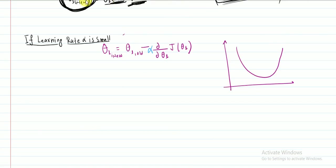Let's look at the learning rate. If the learning rate alpha is small, gradient descent will be slow. Because alpha is small and your slope is small, for this J(theta1) you will take smaller steps. So you will have to do more steps, and in this case your gradient descent algorithm will be slow because you are taking small steps due to this small alpha.